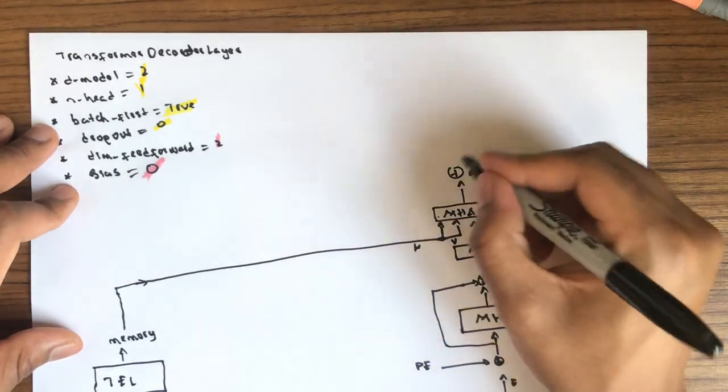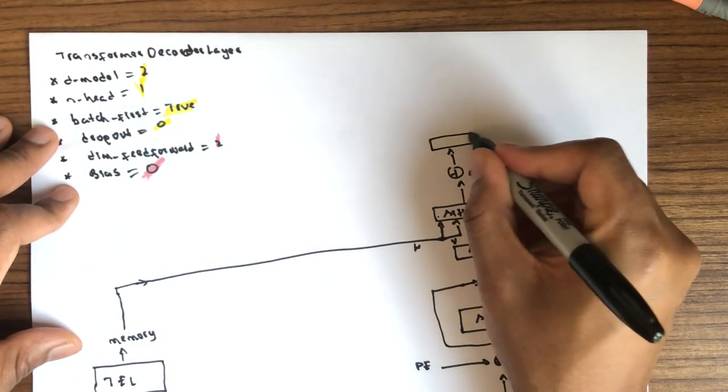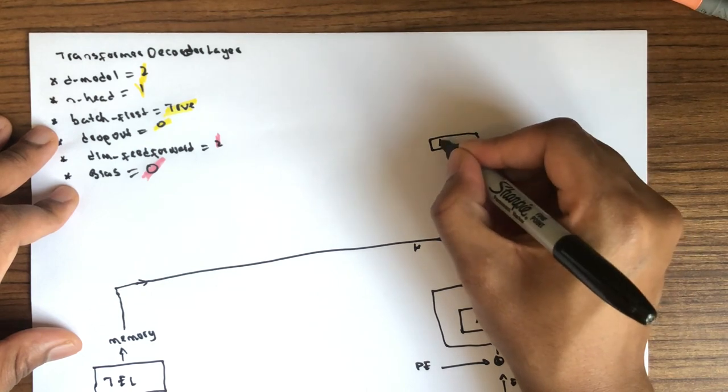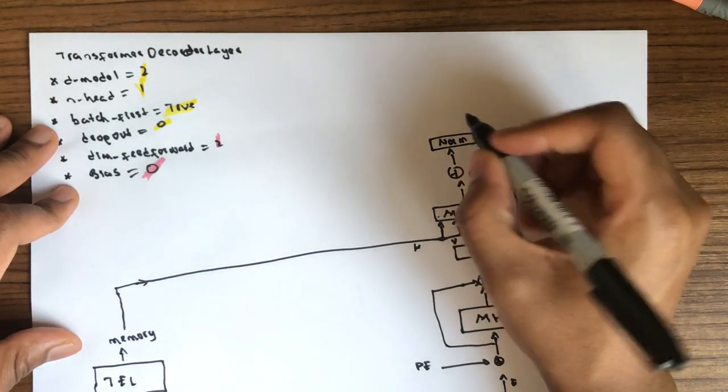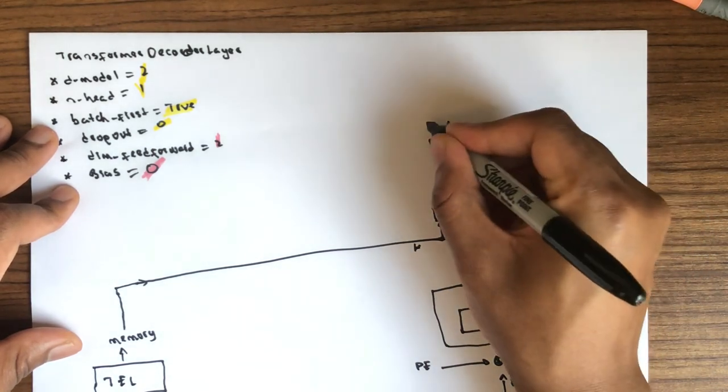And they go through one more normalization. This norm goes through multiple fully connected layers.